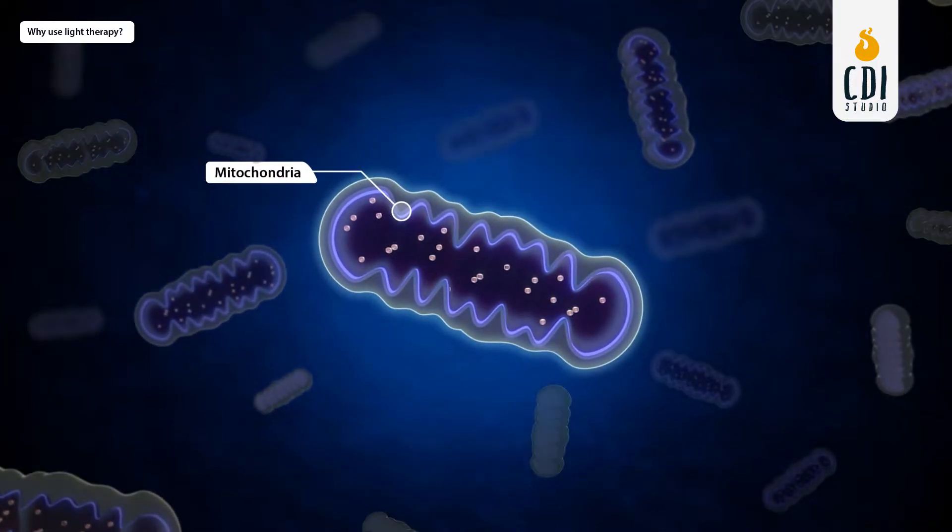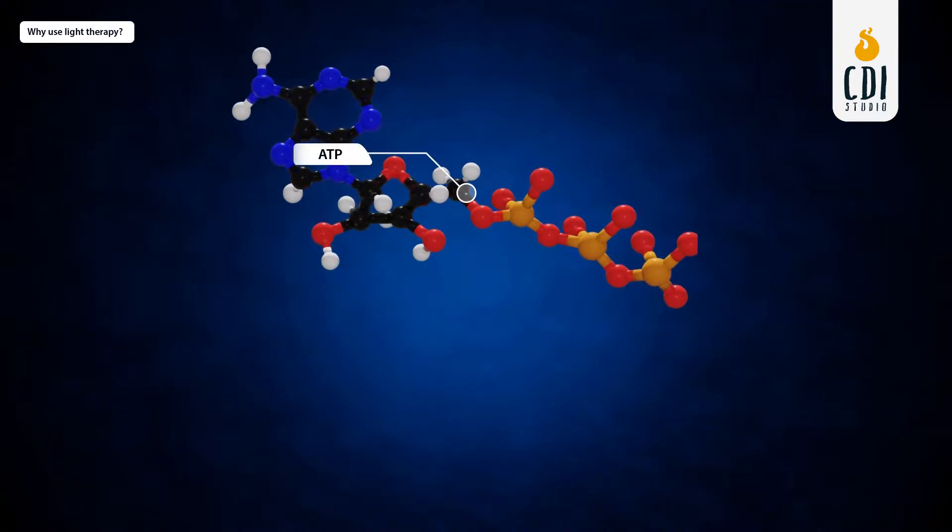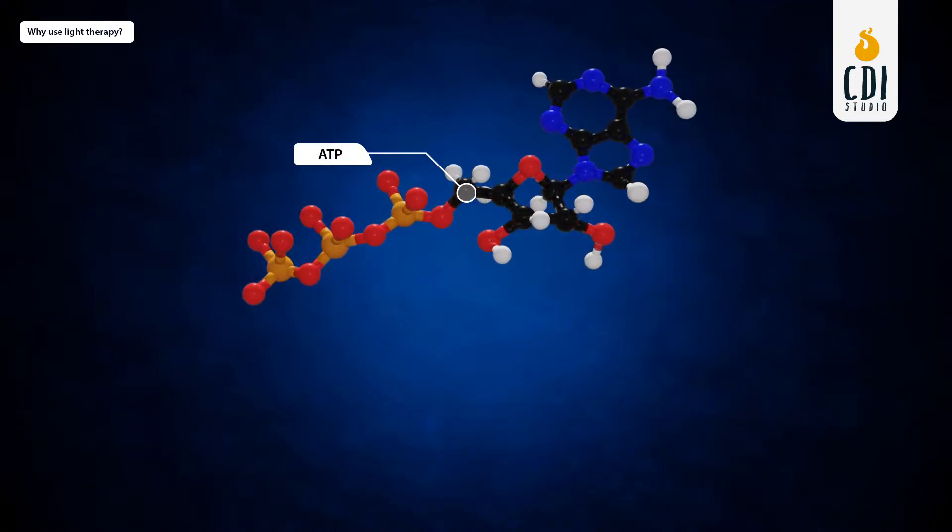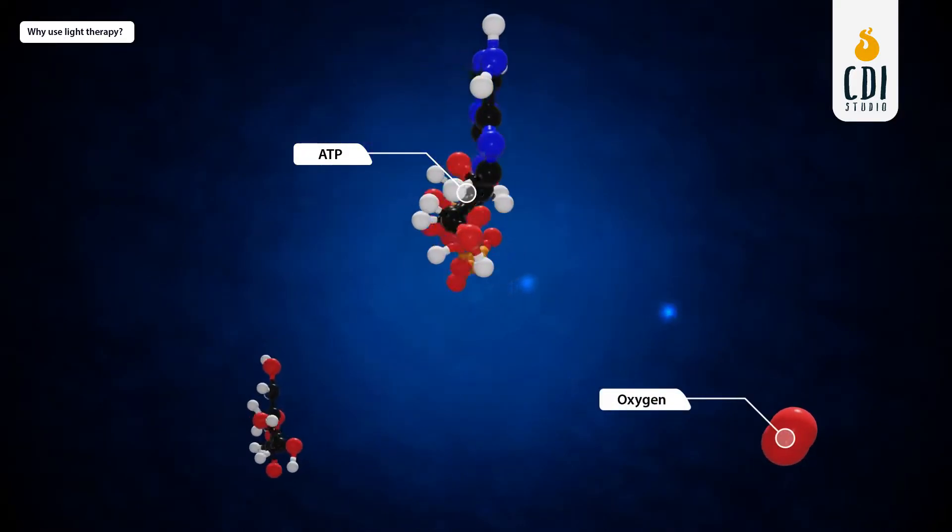This is where our cell's energy is produced. The term for this energy is called adenosine triphosphate, or ATP for short. ATP is formed from oxygen and glucose, both of which are carried to cells by blood flow.